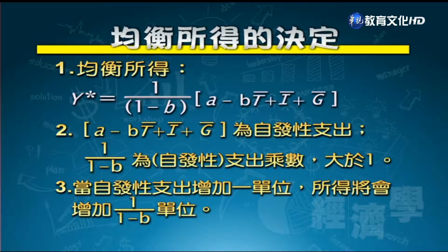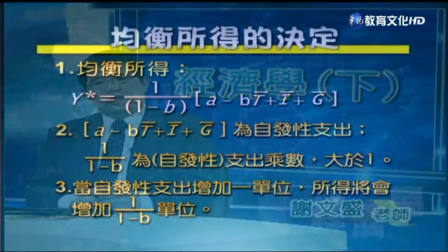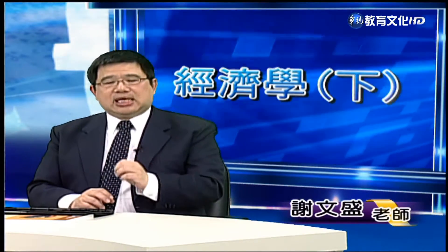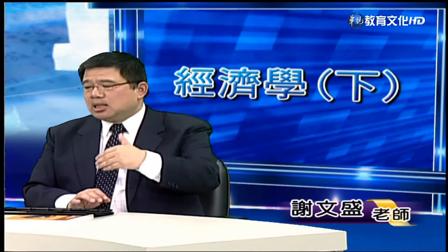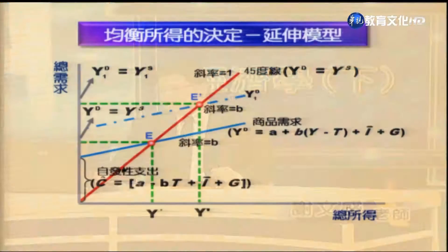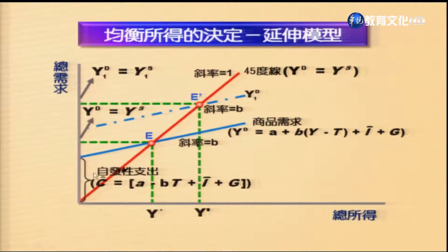加入政府部門後，均衡所得公式中，乘數 1/(1-B) 不變，但自發性支出多了「-BT̄」（租稅部分）與「Ḡ」（政府支出部分）。透過圖形說明：原始有效需求線為 A + B(Y-T̄) + Ī + Ḡ，均衡點在 E1。